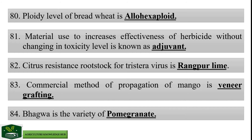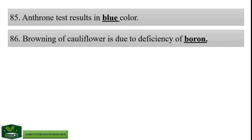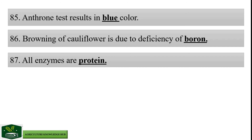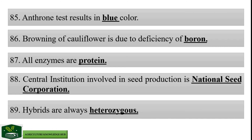Anthrone test results in blue color. Browning of cauliflower is due to deficiency of boron. All enzymes are proteins. Central institution involved in seed production is National Seed Corporation, also known as NSC. Hybrids are always heterozygous.